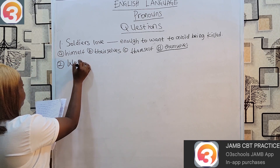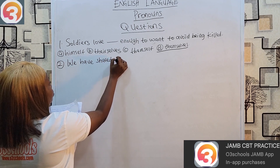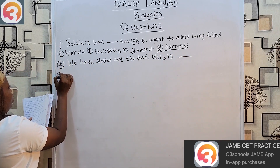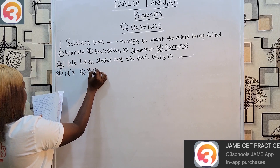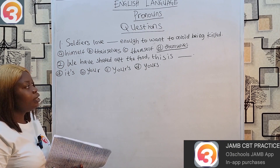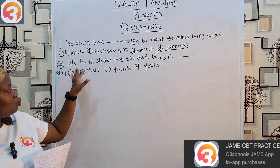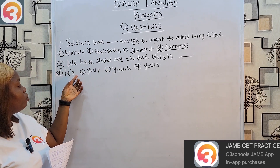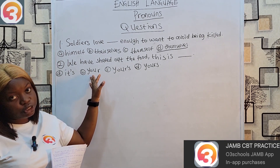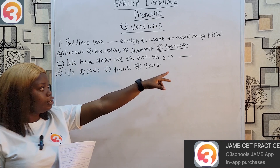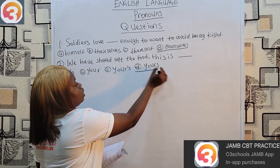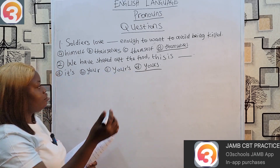Question two: 'We have shared out the food. This is dash.' We are talking about persons, so 'it' is wrong. 'Your' requires a noun after it. The option with an apostrophe is a possessive pronoun — possessive pronouns don't take apostrophes. The answer is 'yours.' We have shared out the food — this is yours.